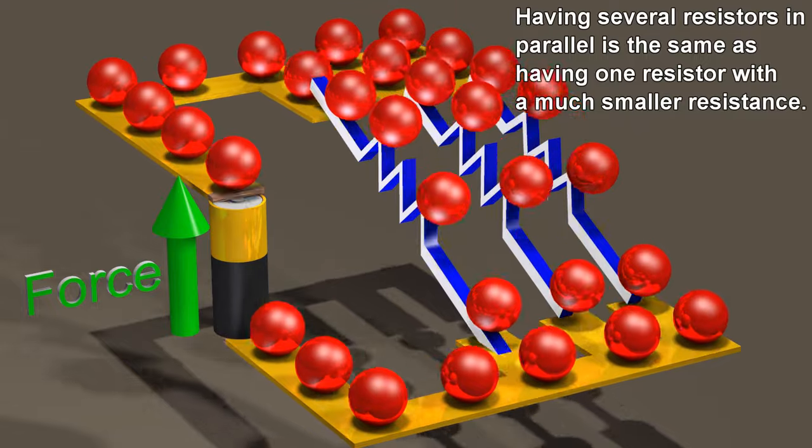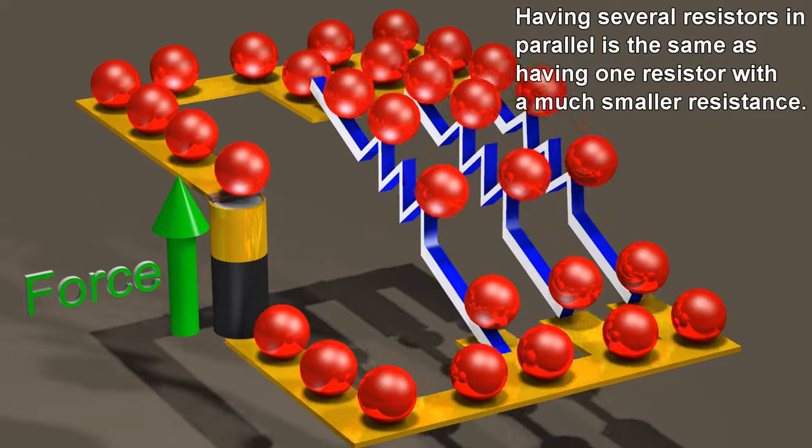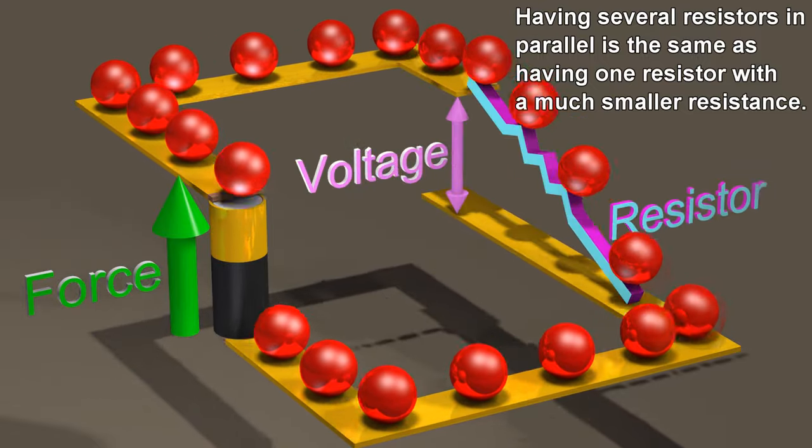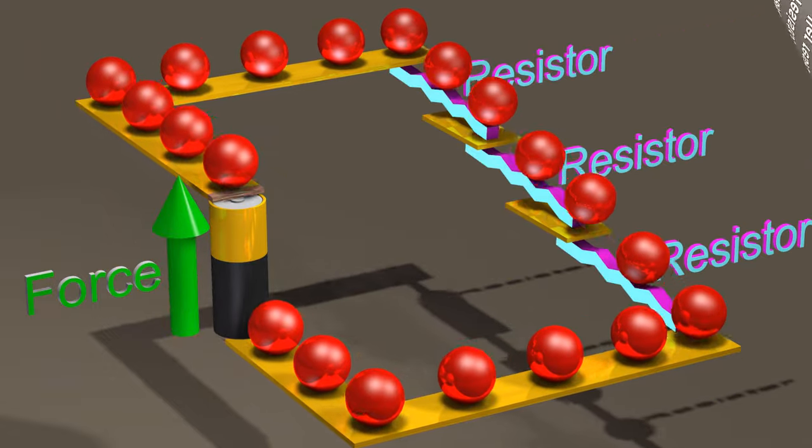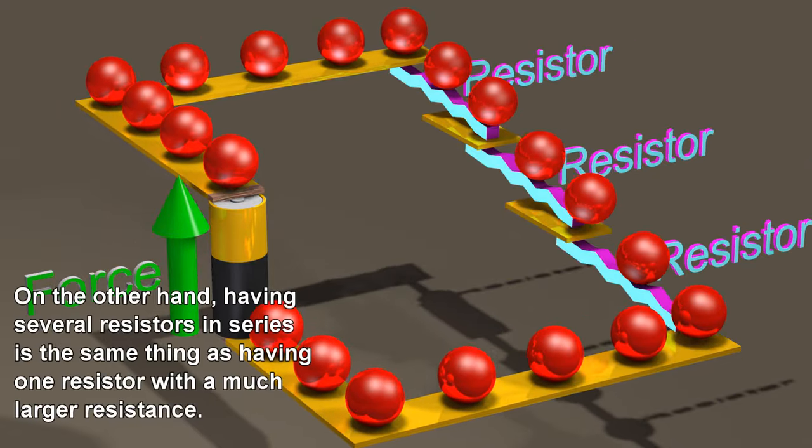Having several resistors in parallel is the same as having one resistor with a much smaller resistance. On the other hand, having several resistors in series is the same thing as having one resistor with a much larger resistance.